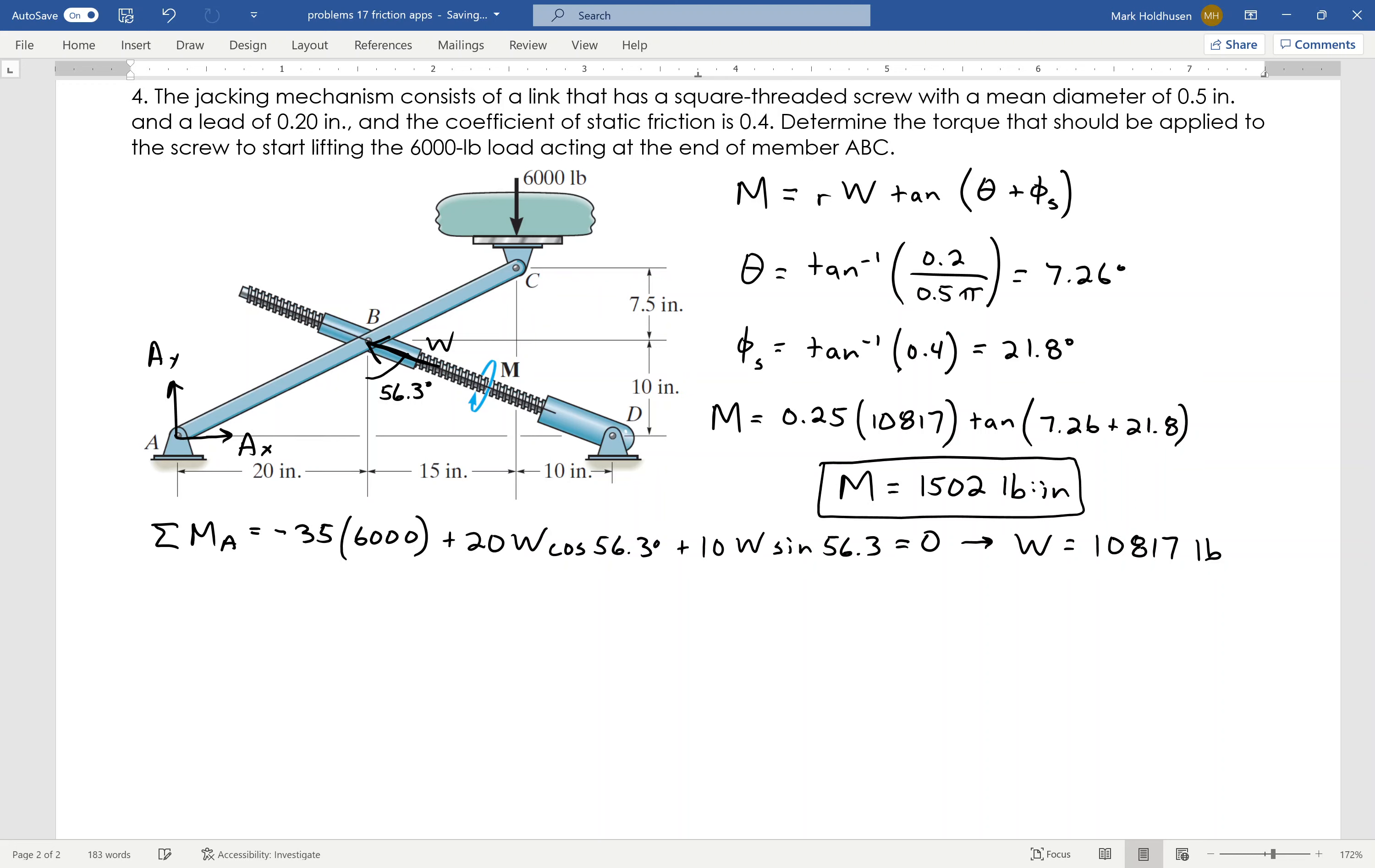So again, W is the force through the screw. Based on my picture here, I can find that using statics by taking the sum of the moments about A on member ABC. And then just using those two angles that are pretty easy to find, I can go ahead and calculate the moment necessary to lift this.